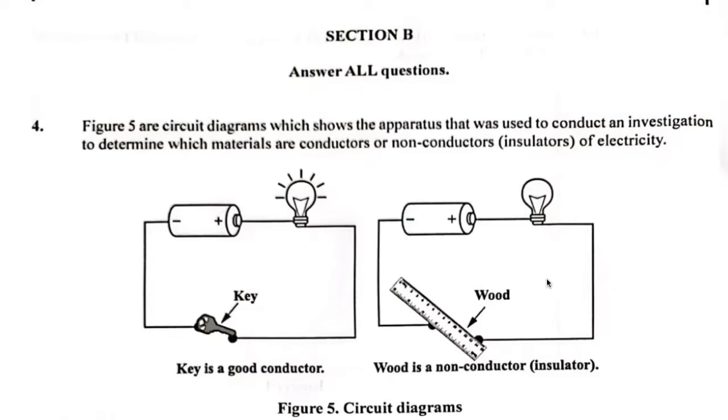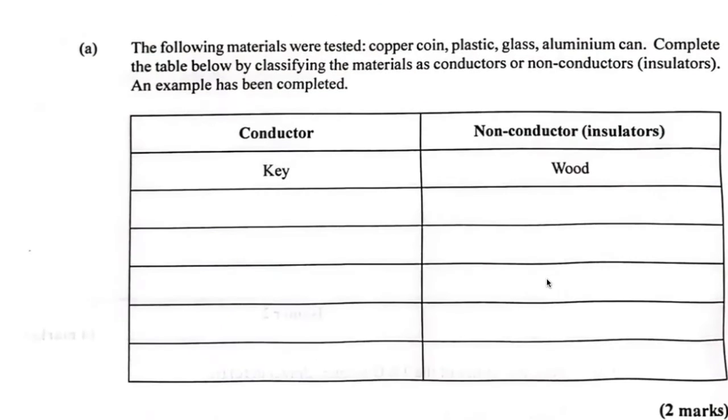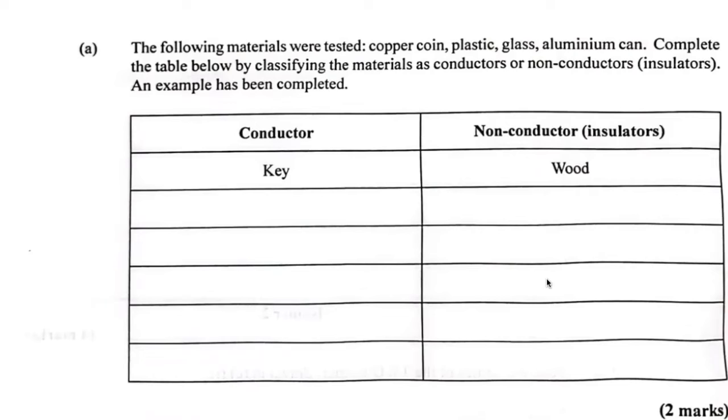So we're going to explore and see what it is that's required of us. The following materials were tested: Copper coin, plastic, glass, aluminum can. Complete the table below by classifying the materials as conductors or non-conductors. An example has been completed.